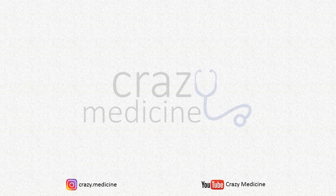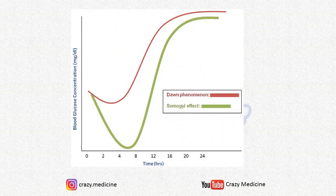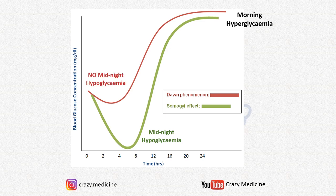Now for revision, let's compare the graphs. In Somogyi effect there is midnight hypoglycemia followed by early morning hyperglycemia due to release of counter-regulatory hormones. And in Dawn effect there is no midnight hypoglycemia, but early morning hyperglycemia will be there due to low dose of evening insulin.